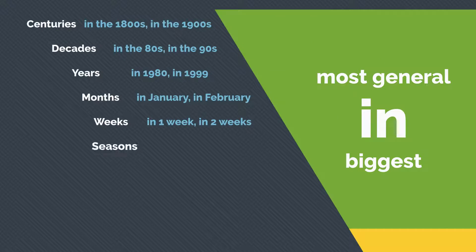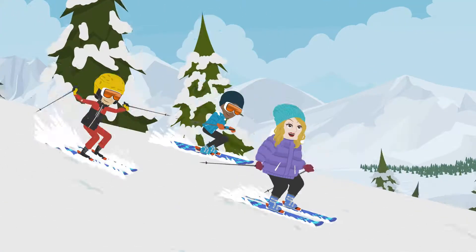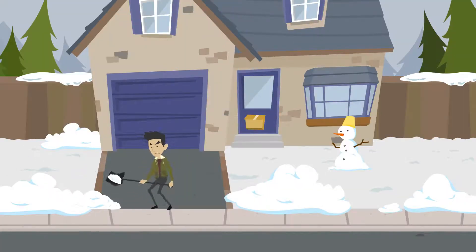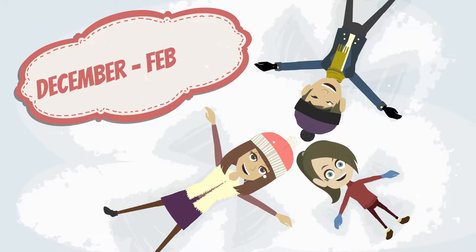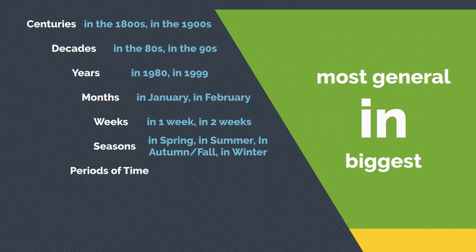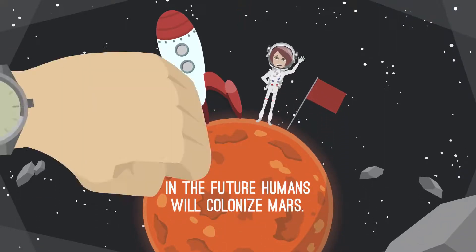In can also be used for seasons, such as in spring, in summer, in autumn or fall, in winter. For example, they like going skiing in the winter. Depending where you live, winter can be very different — in the US, for example, you could be referring to any time between December and February. It can also be used to describe periods of time, such as in the future or in the past. For example, in the future, humans will colonize Mars. The future is infinite — it just means any time after now.